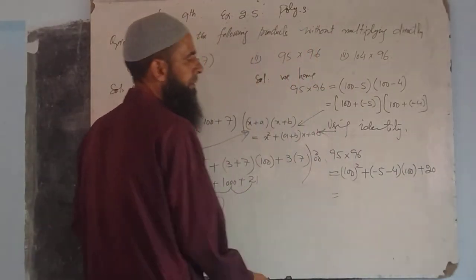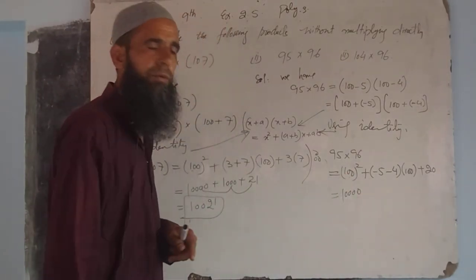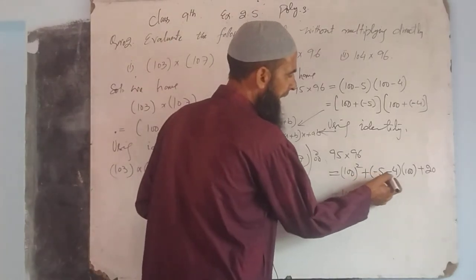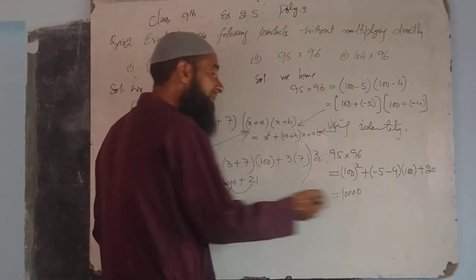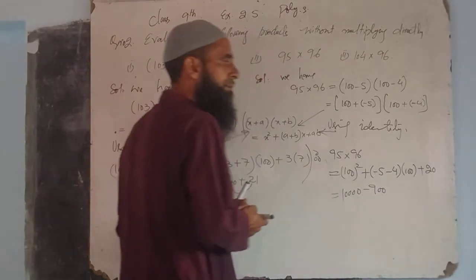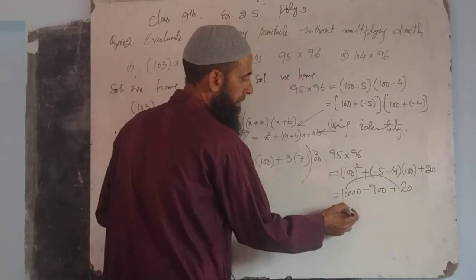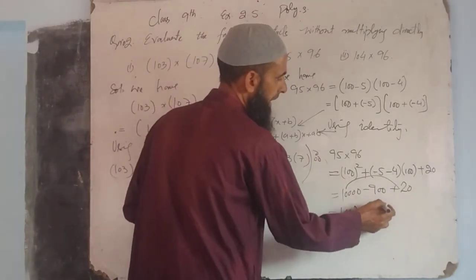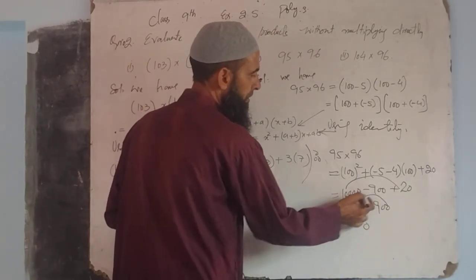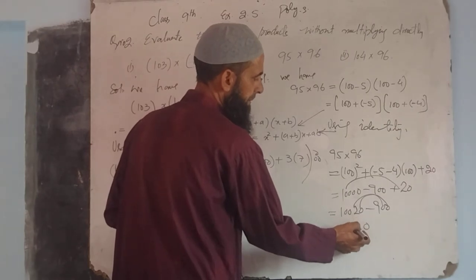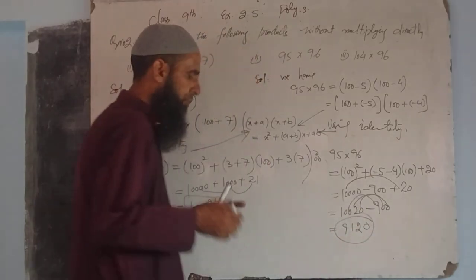We get: 100² is 10000, minus 9 into 100 is minus 900, plus 20. Ab inko sum karenge: 10000 minus 900 plus 20. That gives us 9120. Ye hamare paas inka product hoga.